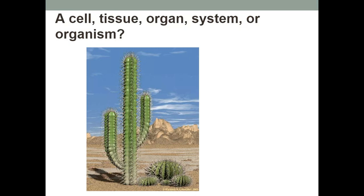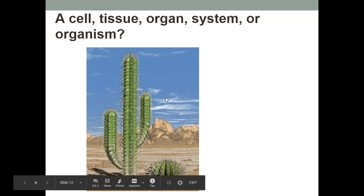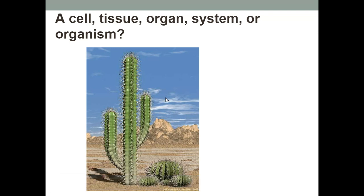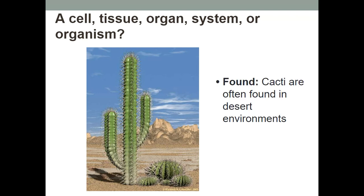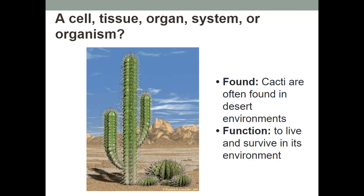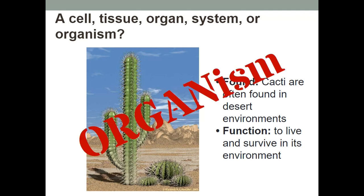Let's see if you understand what we were talking about. Here's a picture — is it a cell, a tissue, an organ system, or an organism? It's a cactus, often found in desert environments, and its function is to live and survive in its environment. The answer is organism. If you said organism, you were correct.